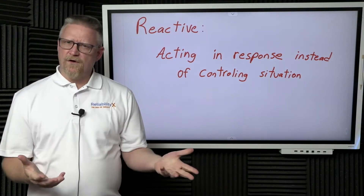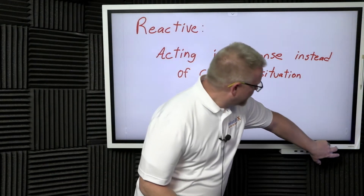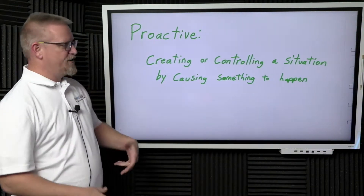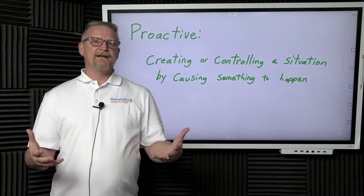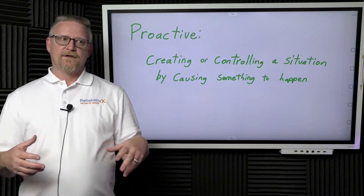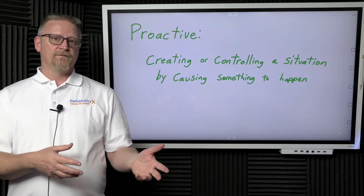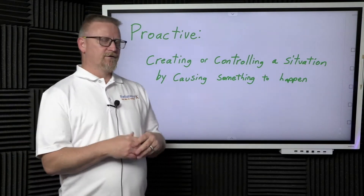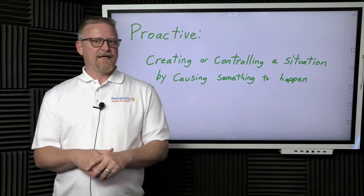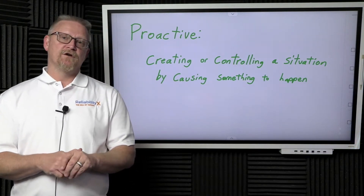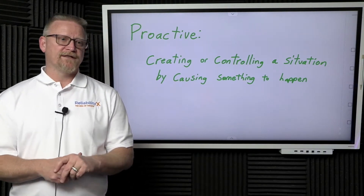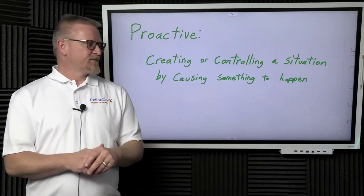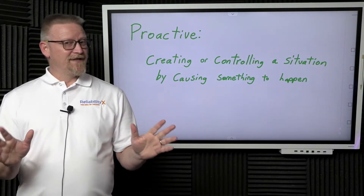Let's look at what proactive looks like. In order to be proactive, this basically means that you are creating the scenario in which you are in control, and you are creating the responses. In order to be proactive in maintenance and reliability, you have to show and demonstrate that your system is controlling the environment. Again, this can be a little gray.